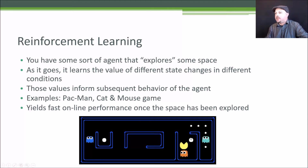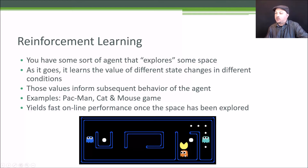For example, the state of Pac-Man might be defined by the fact that it has a ghost to the south, a wall to the west, and empty spaces to the north and east. That defines the current state of Pac-Man. The state changes it can take would be to move in a given direction, and it can learn the value of going in a certain direction. If it moves north, nothing really happens — no reward. But if it moves south, it would be destroyed by the ghost, which is a negative value. By exploring the entire space, it builds up all possible states and the values associated with moving in each direction. That's reinforcement learning.